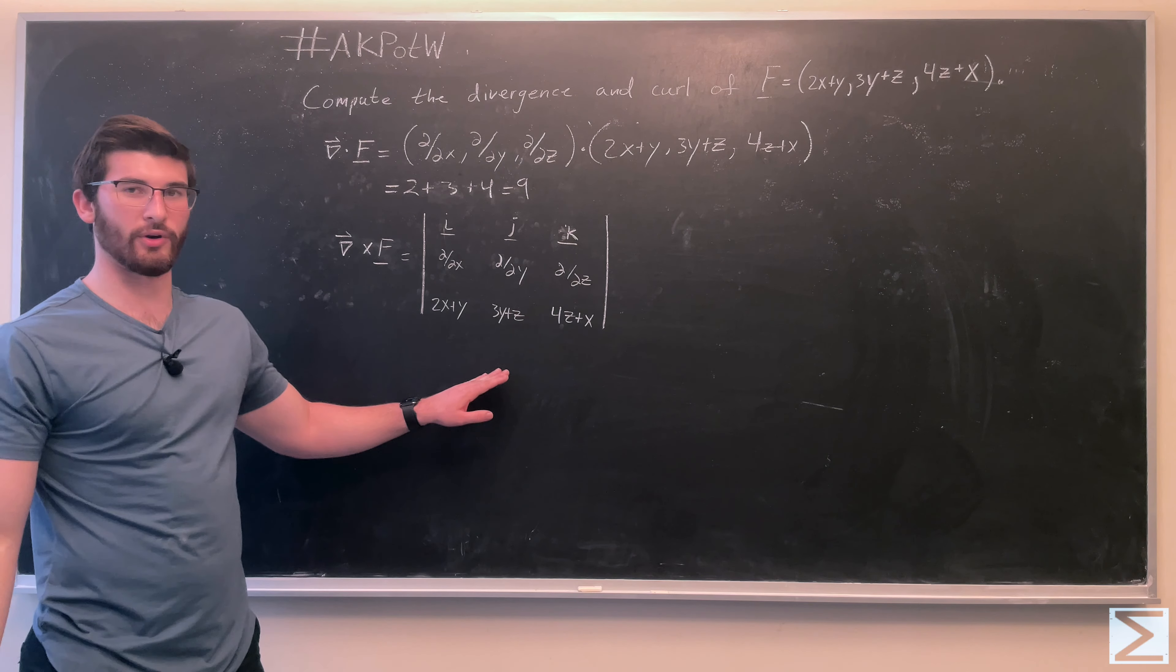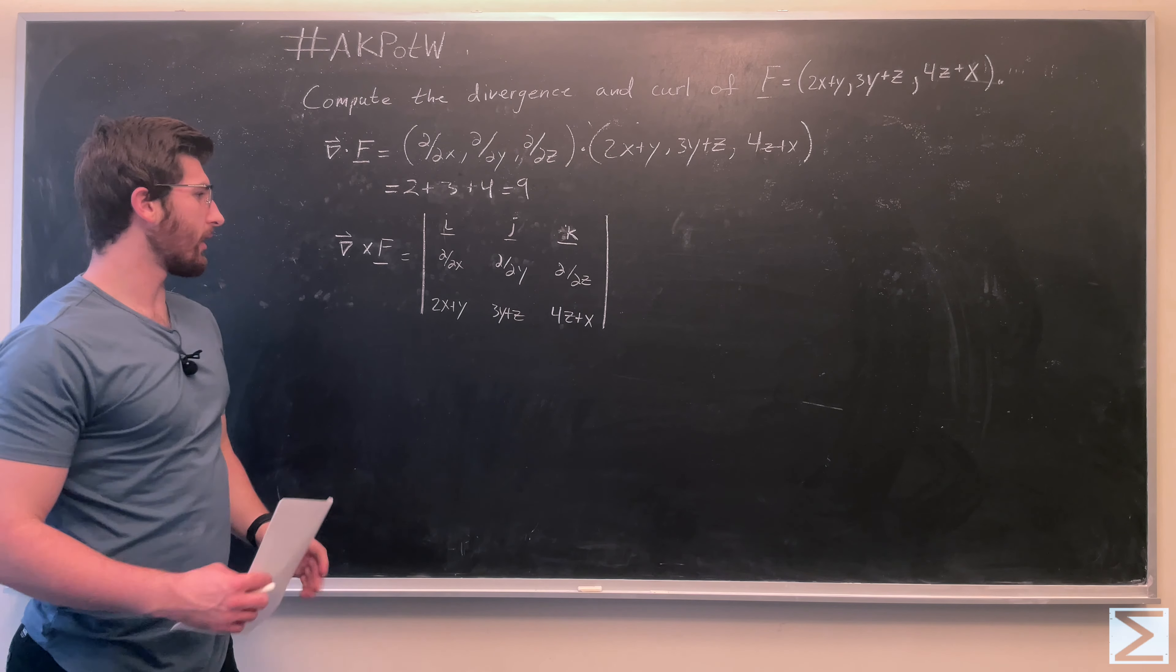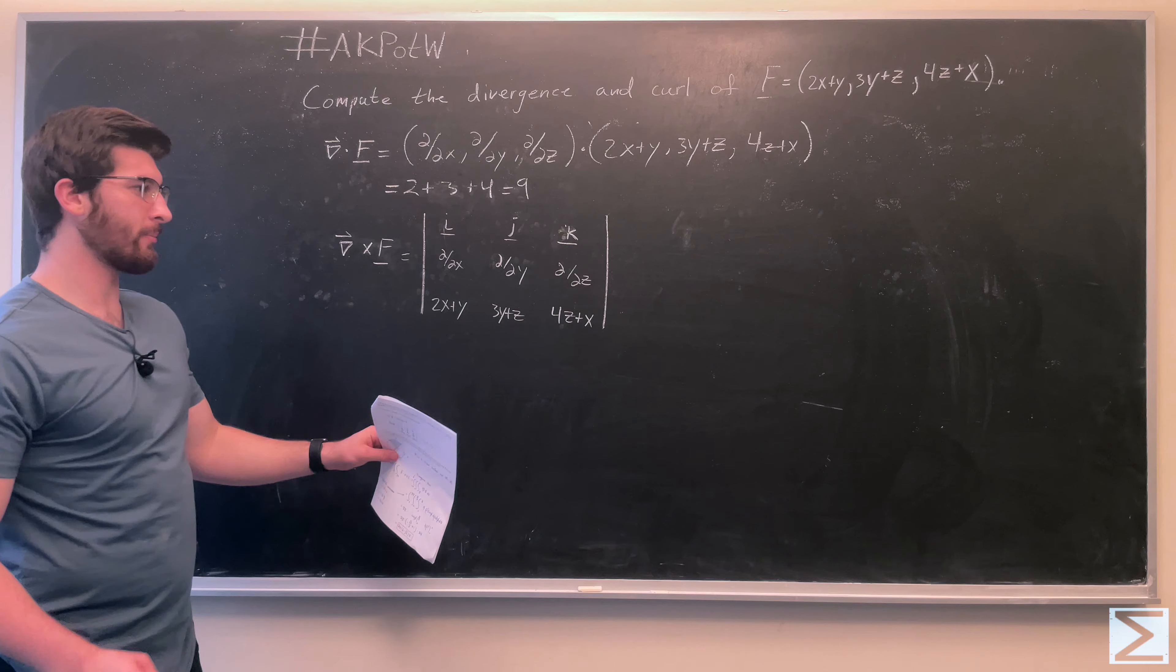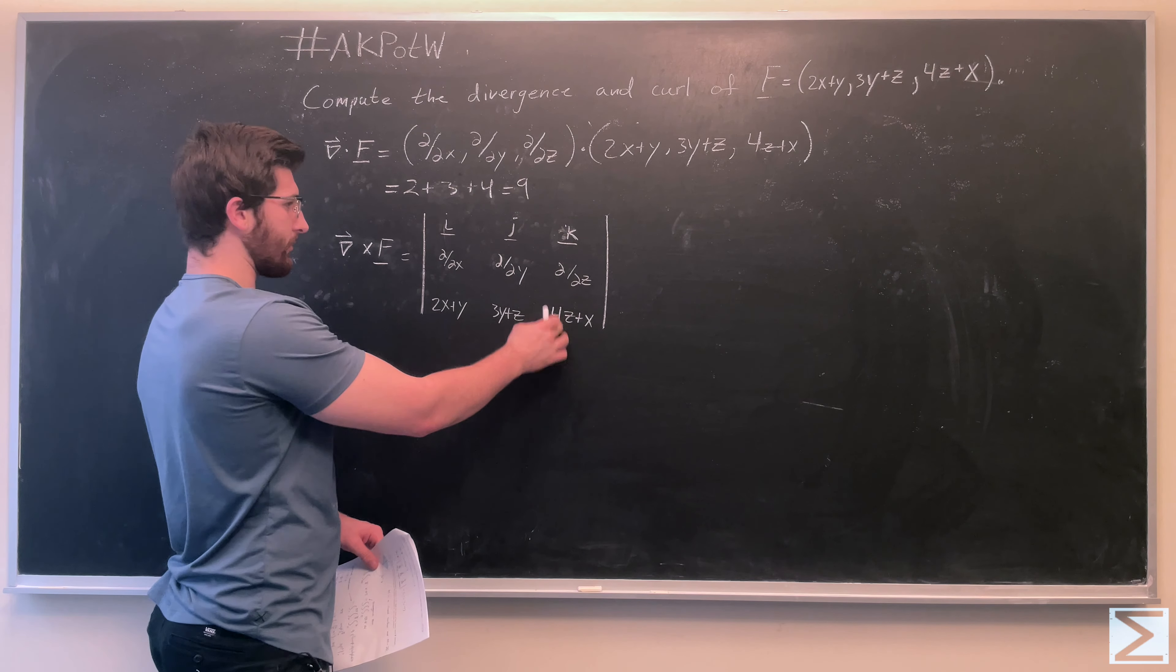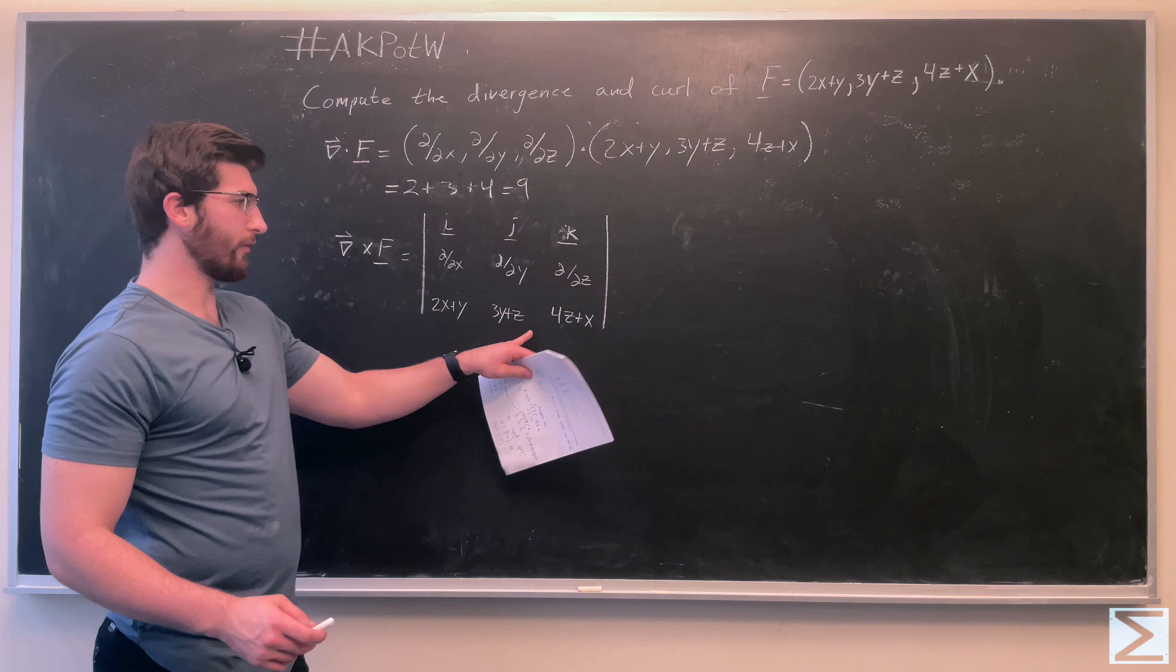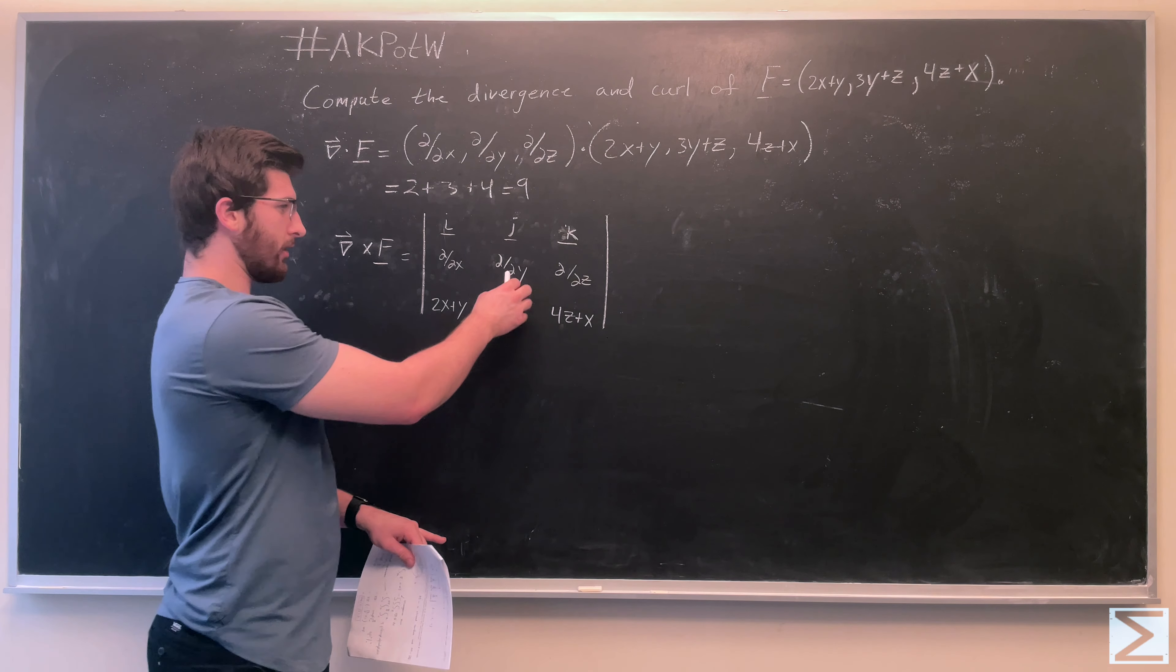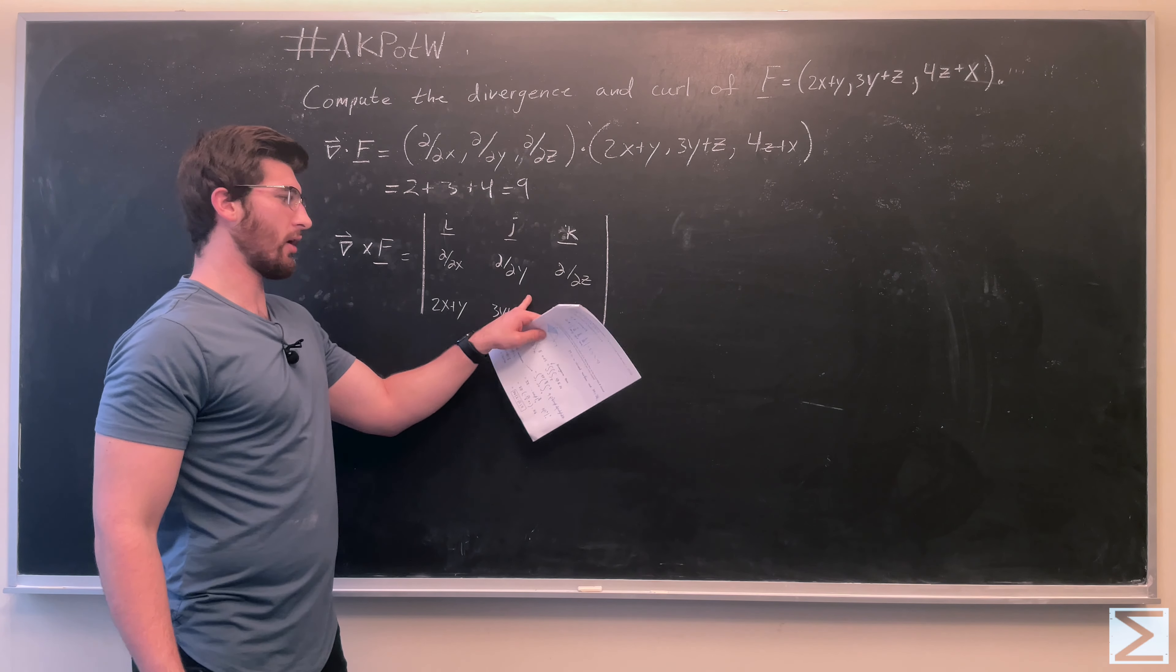So once you set up your matrix, you're going to take the determinant, and you're going to start by looking at just these 4, and you're going to take the partial derivative of 4z plus x with respect to y...